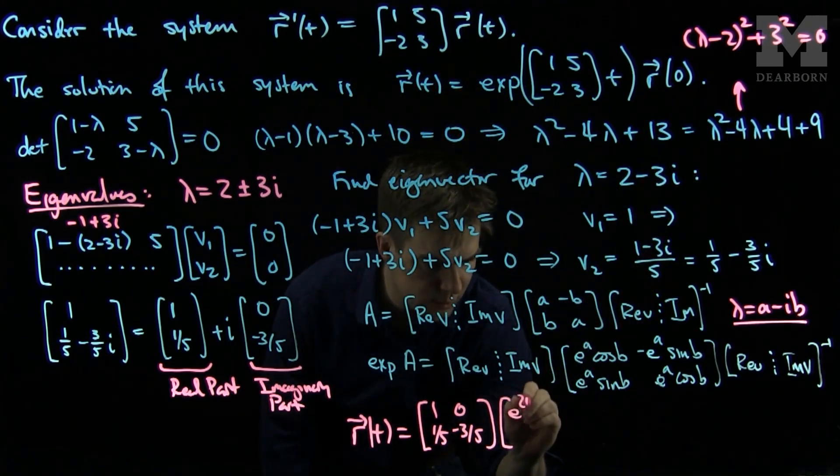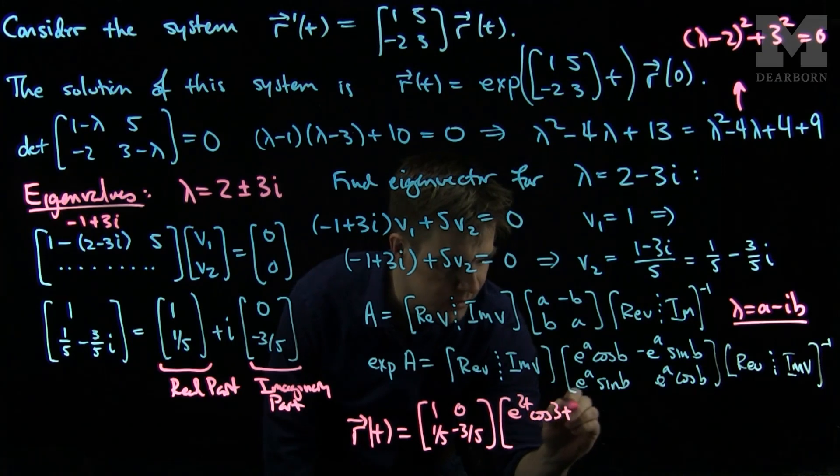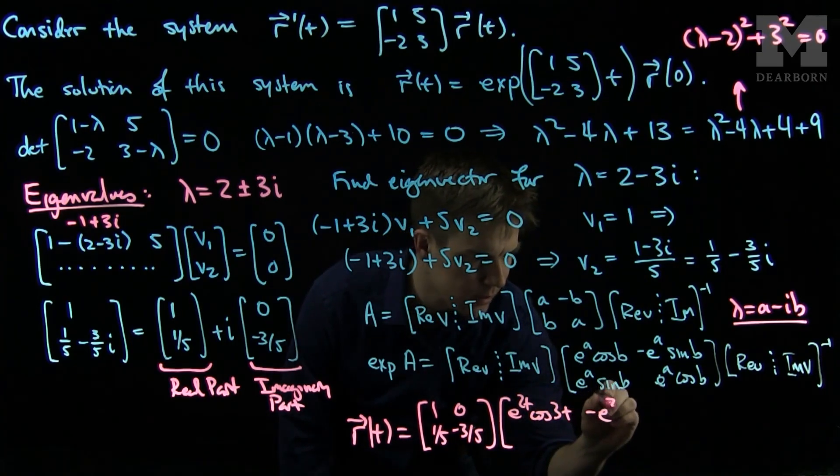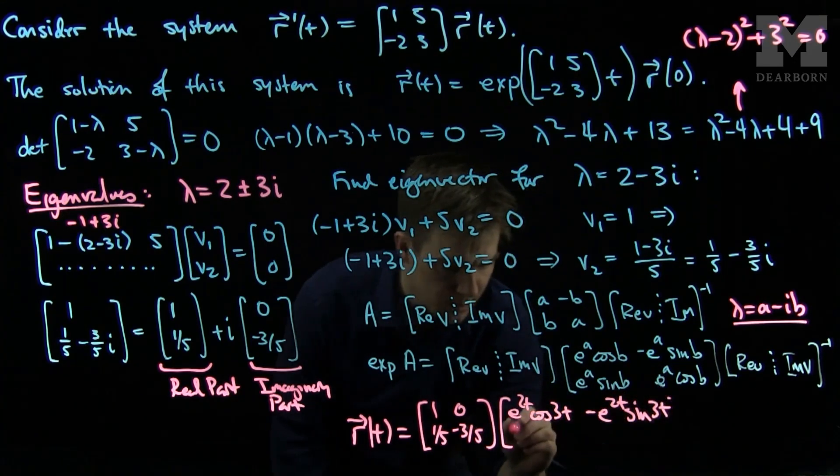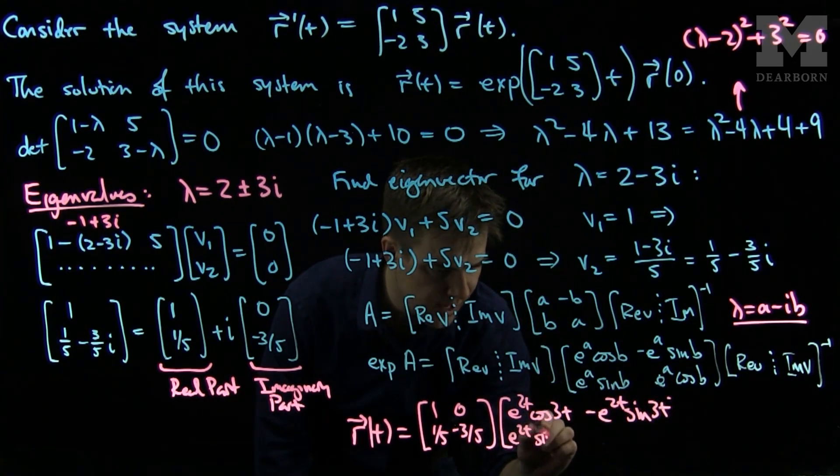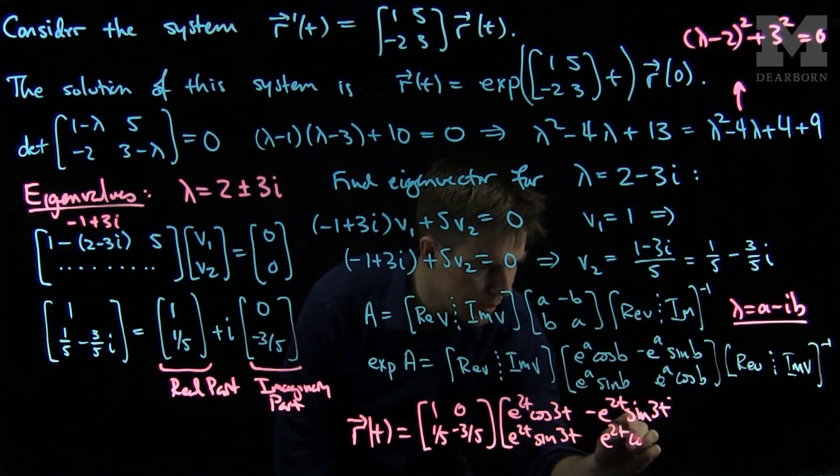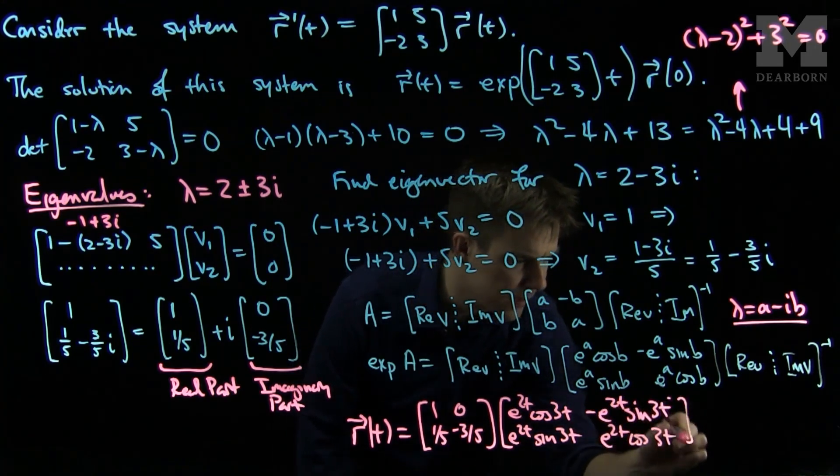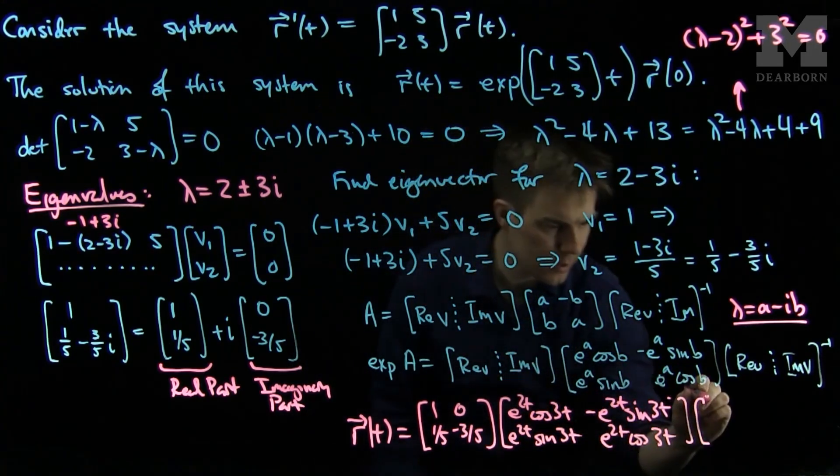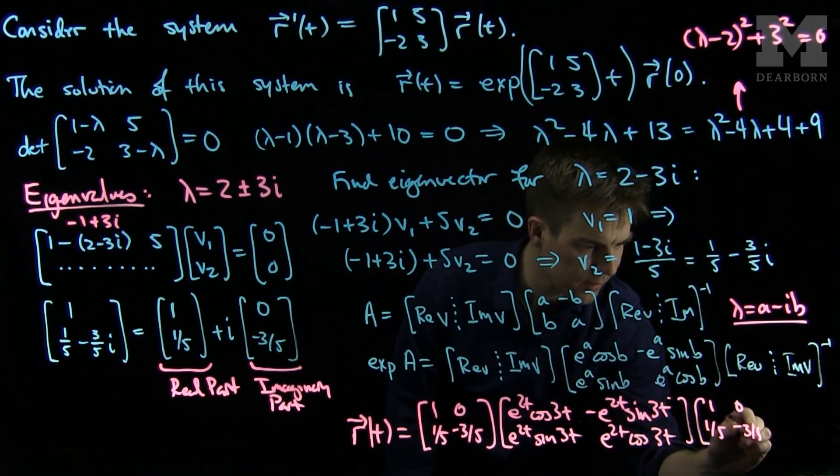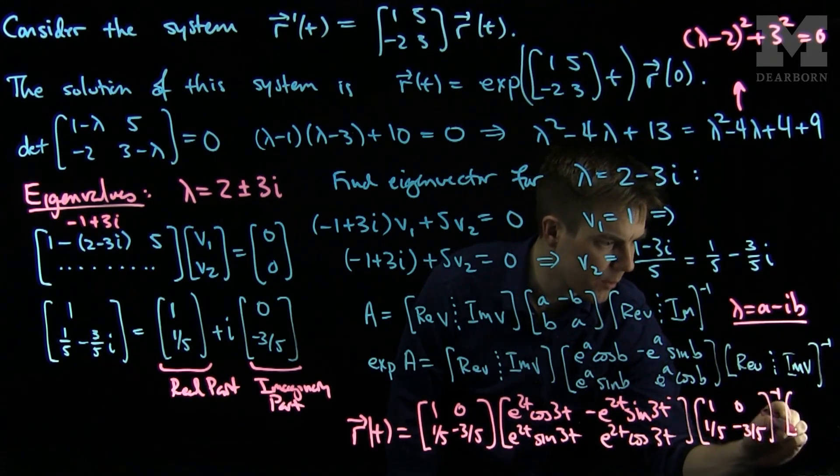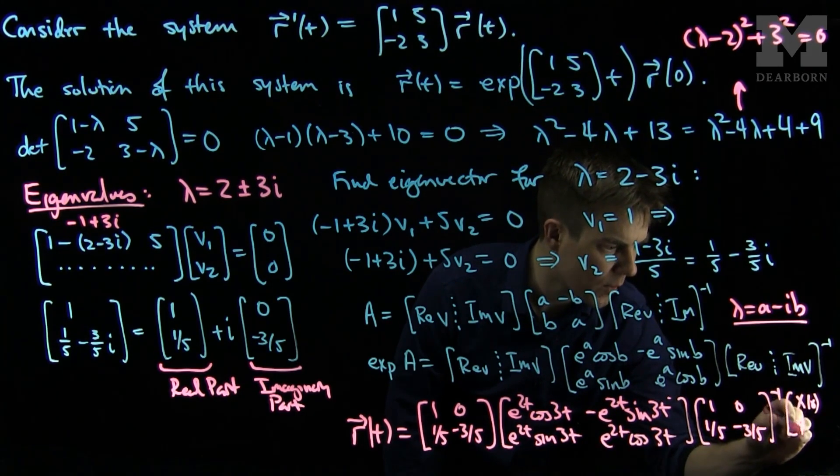And then the inverse of this matrix [[1, 0], [1/5, -3/5]], evaluated at the initial condition [x₀, y₀].